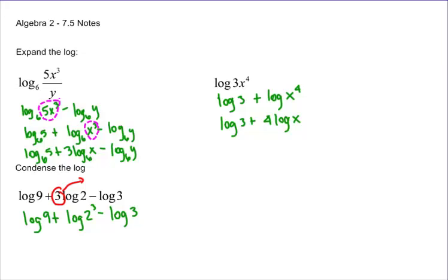Now I've got the plus sign here, which means I'm going to have multiplication. So I've got log nine times two to the third minus log three.